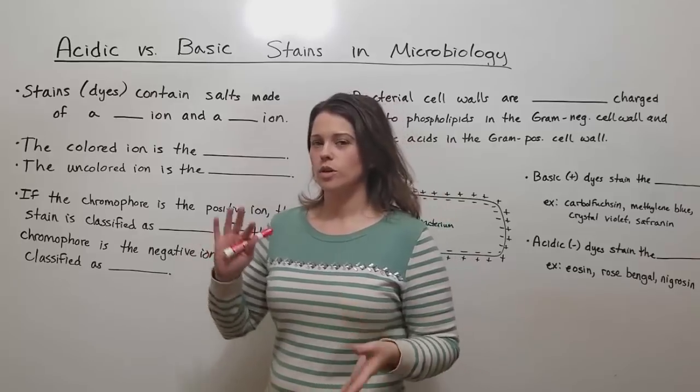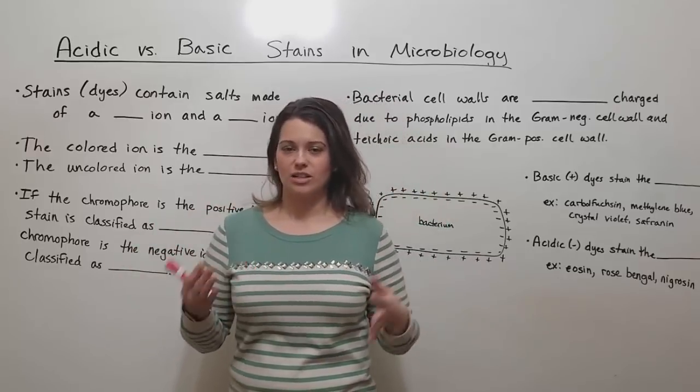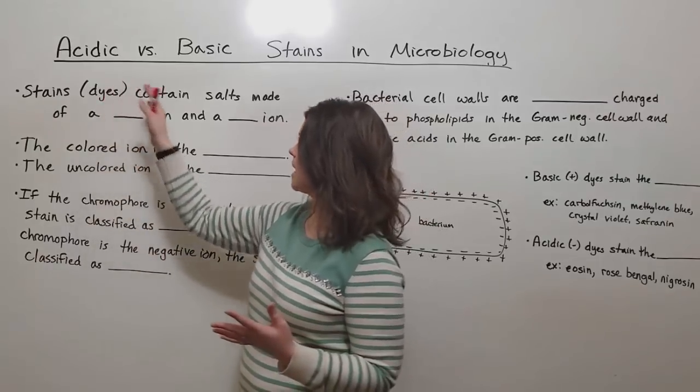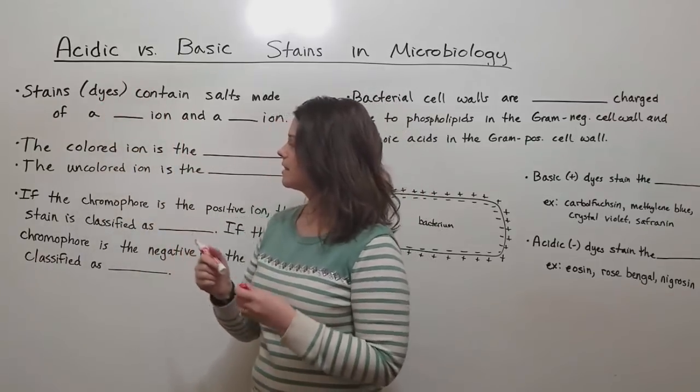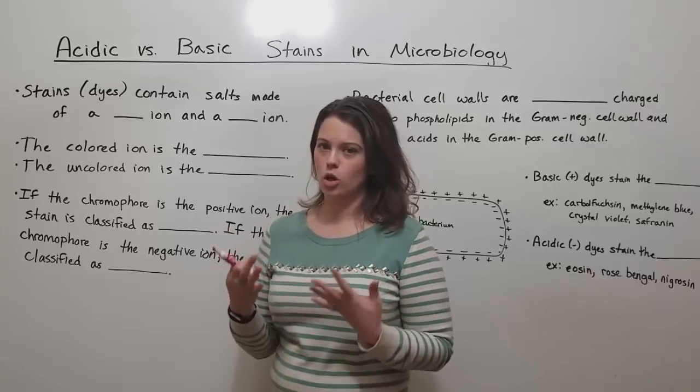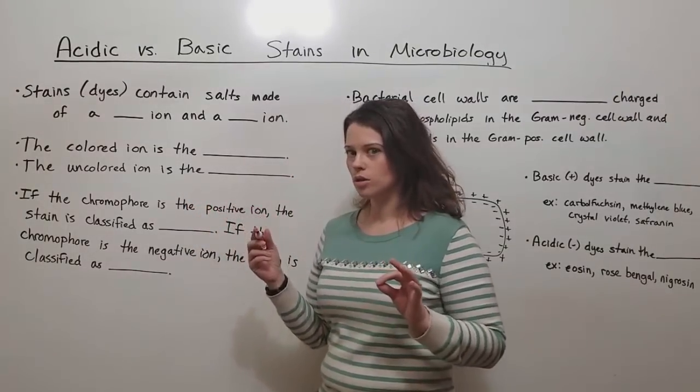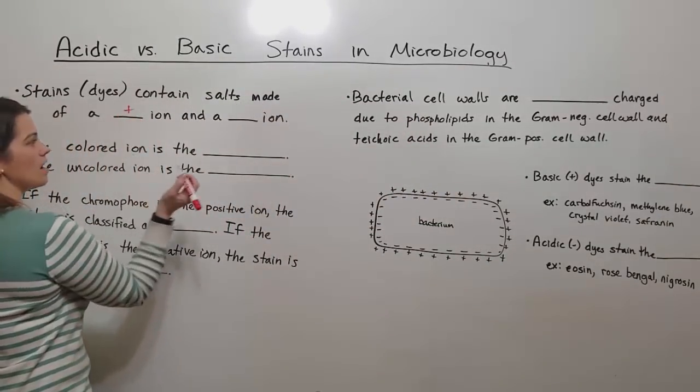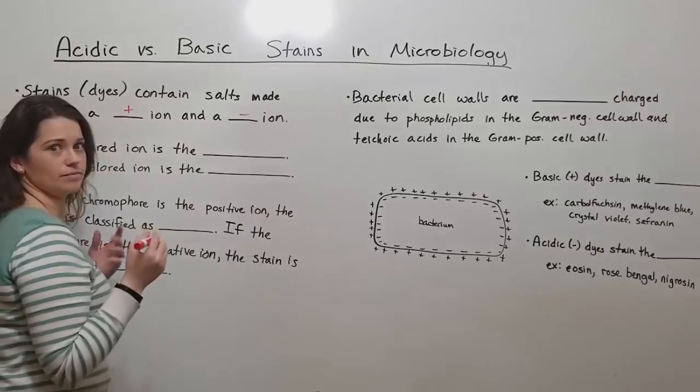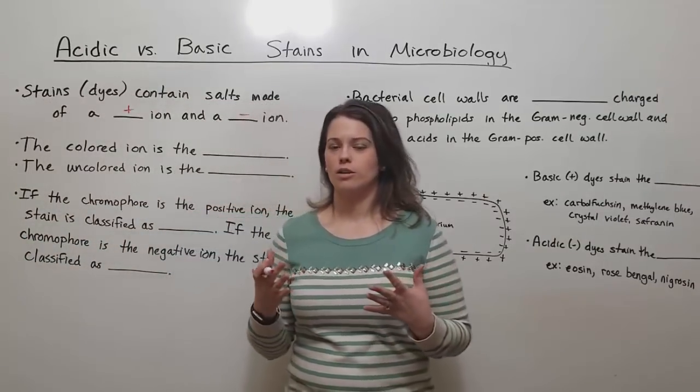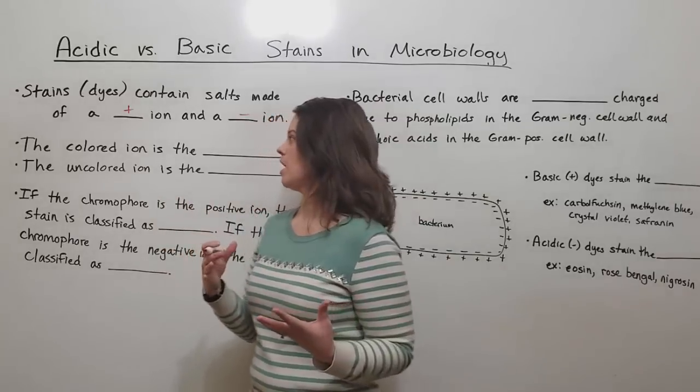You can use the word stain or dye interchangeably - acidic or basic stains, acidic or basic dyes. Either way, these stains are made up of dissolved salts. We know from chemistry that salts are composed of a positive ion and a negative ion. So all of the stains you're used to hearing about in microbiology are made up of a positive and a negative ion.